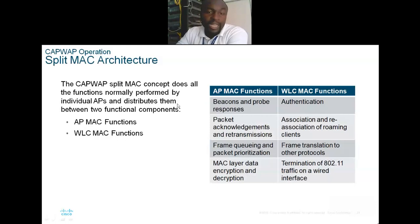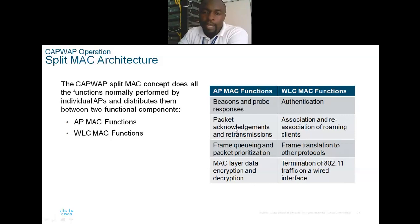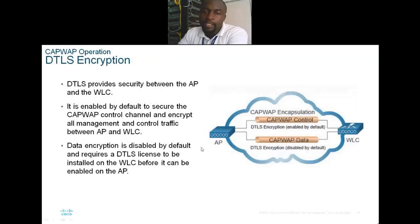The CAPWAP split MAC concept distributes functions normally performed by individual APs between two functional components: AP MAC functions and WLC MAC functions. AP MAC functions include packet acknowledgement, frame queuing, and association and re-association of roaming. WLC MAC functions include authentication, packet prioritization, security translation, MAC layer encryption, and termination of 802.11 traffic to the wired interface.